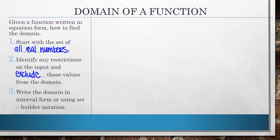And then the third step is to write your domain in interval form or using set builder notation. I'm completely fine with you using whatever works the best for you, and I actually switch back and forth myself based on whatever the scenario is. So if we were asked to find the domain of the following functions, f of x equals the square root of 7 minus 2x.